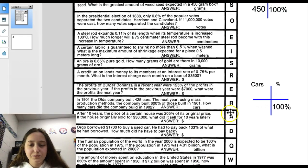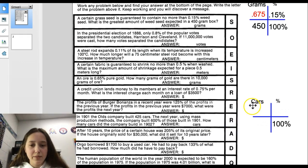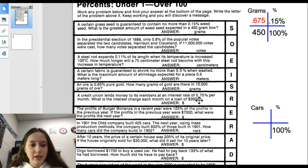The next one we're going to do is the car problem. In 1901, the oldest company built 425 cars. The next year, using mass production methods, the company built 600% of those built in 1901. How many cars did the company build in 1902?